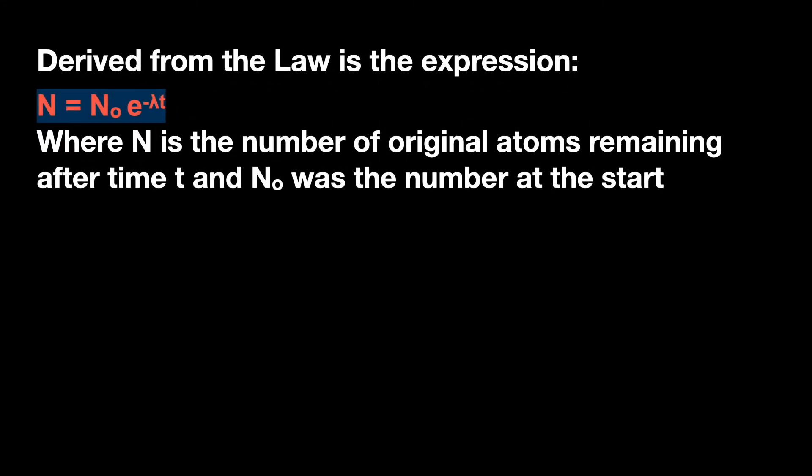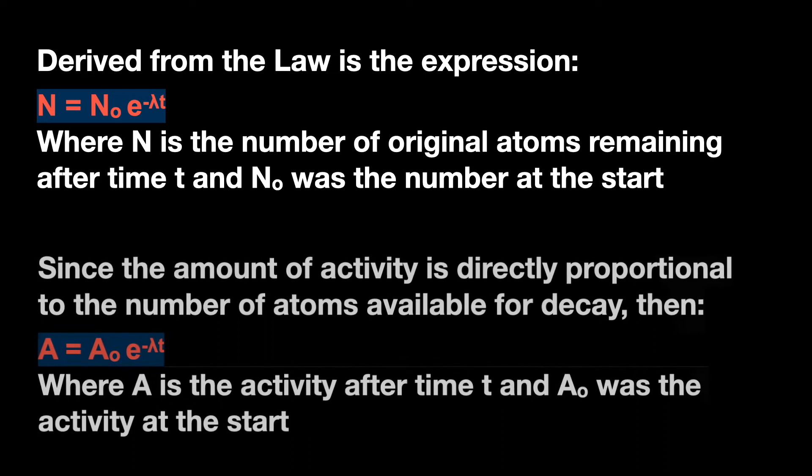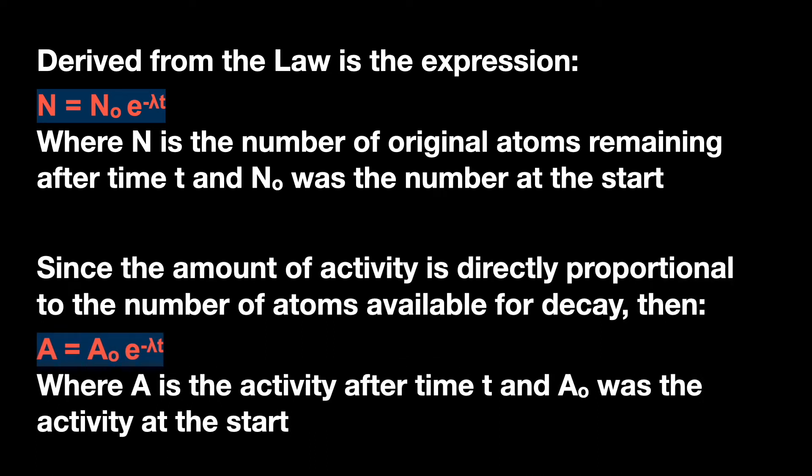Derived from this law, we get the expression that the number of atoms after a certain time t is equal to the number of atoms at the start multiplied by Euler's number, that is the base of natural logarithms, to the power of minus lambda, the decay constant, times t.